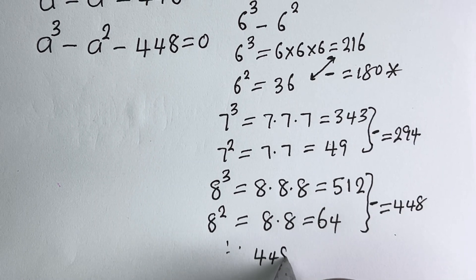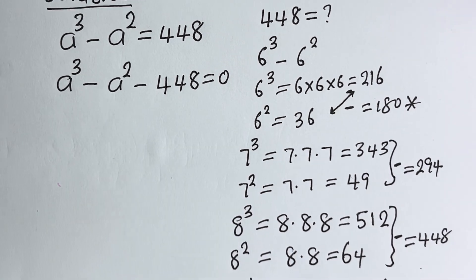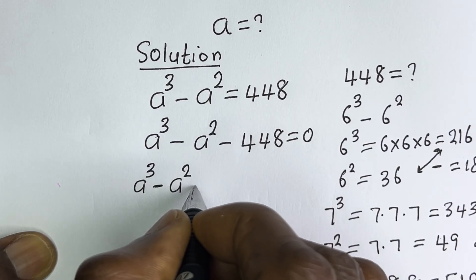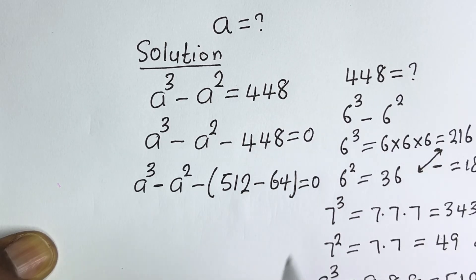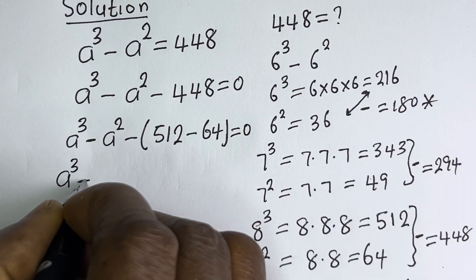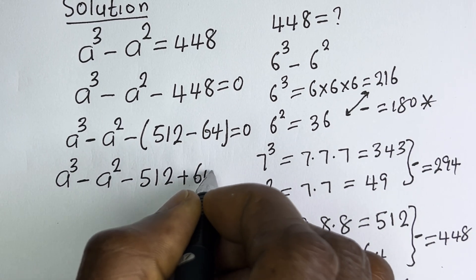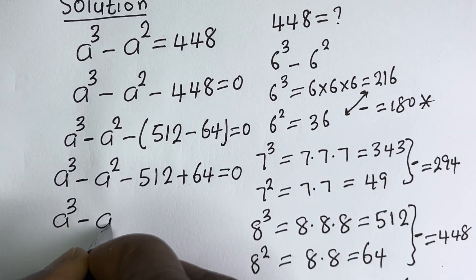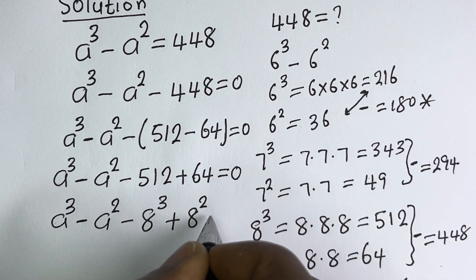Therefore, 448 is equal to 512 minus 64. Substituting into the equation, we have A raised to power 3 minus A squared minus (512 minus 64) is equal to 0. Expanding, this becomes A raised to power 3 minus A squared minus 512 plus 64 equals 0, which is A³ minus A² minus 8³ plus 8² equals 0.